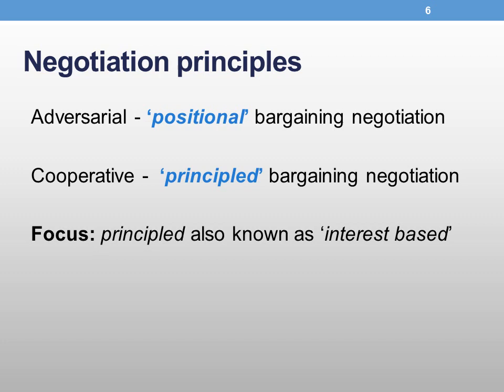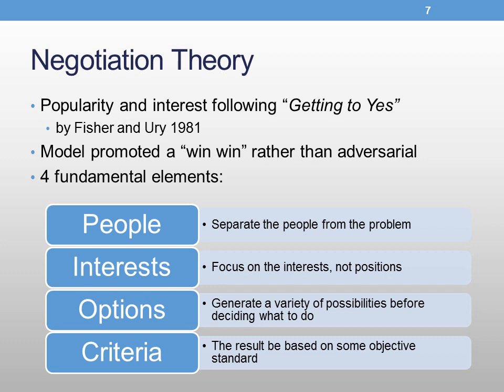The negotiation principles I'm going to talk about: adversarial, which we'll call positional; cooperative or interest-based, referred to as principled. So you've got positional and principled. The principled is often just called interest-based. Some of you may be aware of a book called Getting to Yes by Fisher and Ury back in 1981.